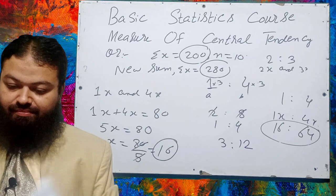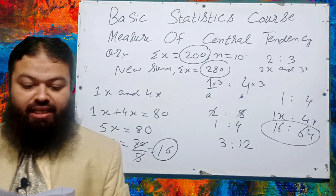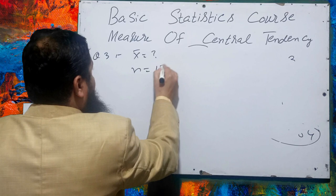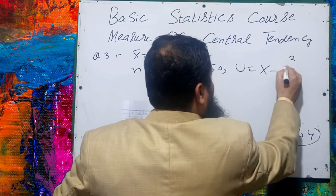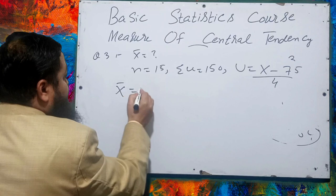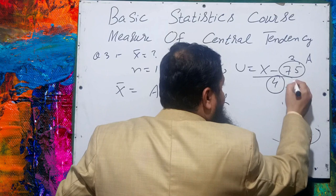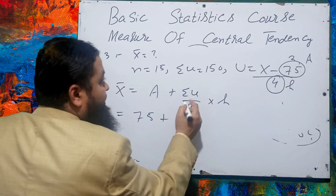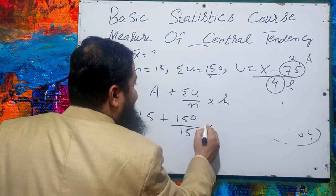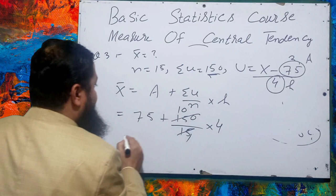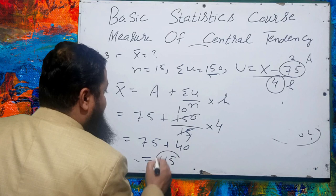Question number 3: find the mean X̄ when n = 15, summation u = 150, and u = (x − 75) / 4. The formula for the mean using the coding method is: x̄ = a + (summation u / n) × h. Here a = 75 and h = 4. Substituting: 75 + (150/15) × 4 = 75 + 10 × 4 = 75 + 40 = 115. The answer is 115.